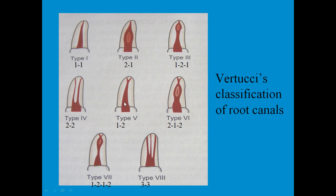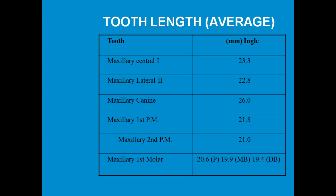Type 1-2 is similar to Weine's type four. There is also a type where two orifices join into one and then divide into two again. The most complicated is one root canal dividing into two, joining into one, and again dividing into two. This is Vertucci's classification of root canals.